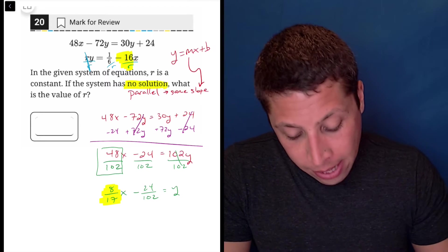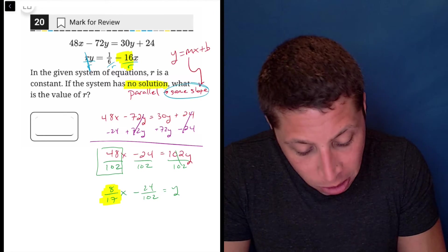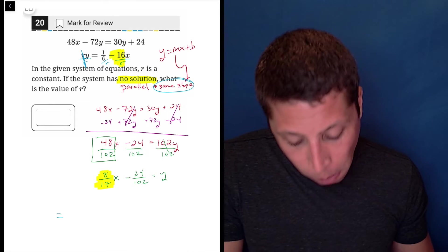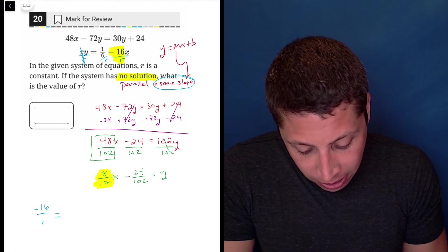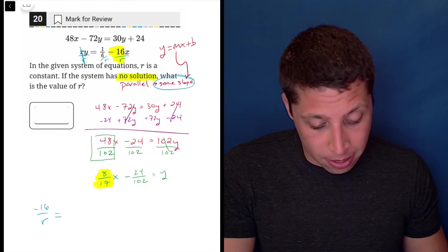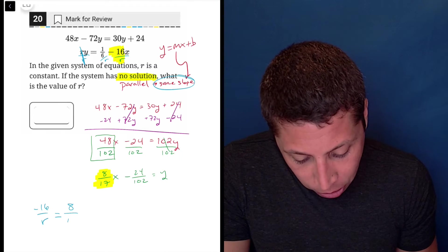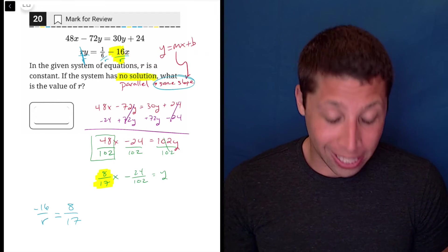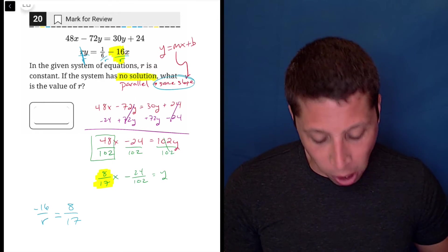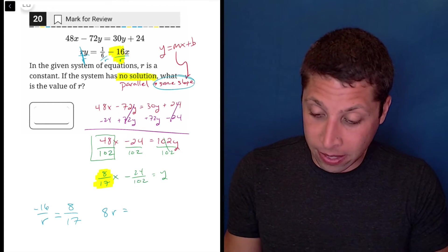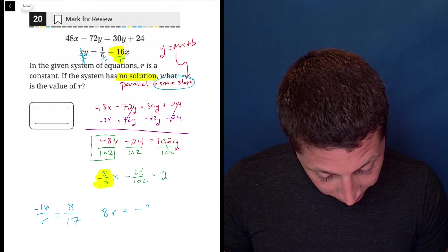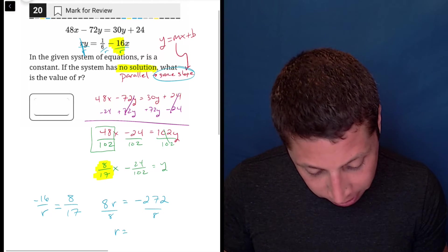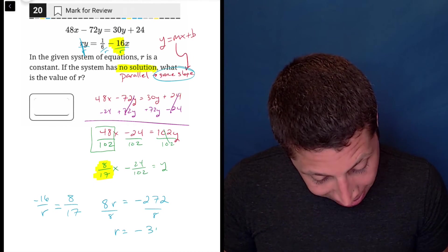So what's really happening here is I need to compare the two slopes. They're supposed to be the same. And in math, when things are supposed to be the same, the way we phrase that is that they are equal. So this negative 16 over r, which is a mystery slope because I don't know the value of r yet, has to be equal to the slope of this other line, which is 8 over 17. They have to have the same slope. So now I can kind of see what's going on is I need to solve for r. So I'm going to cross multiply, 8r is equal to 16 times 17. So that's negative 272. And divide by 8. And we get that r is equal to negative 34.